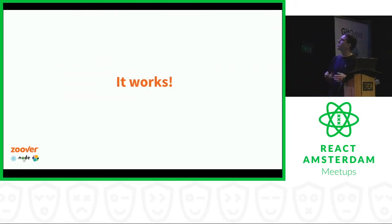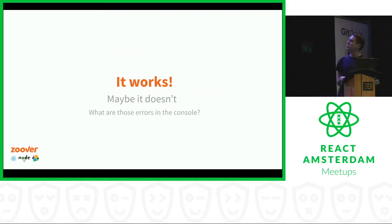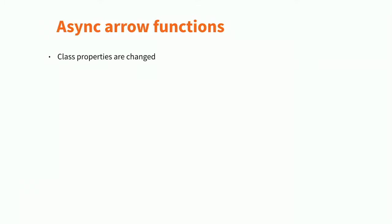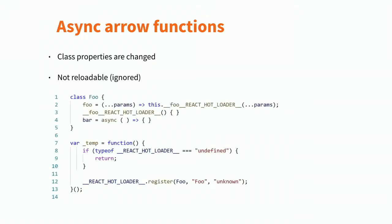Then it works — it's magic, you feel amazing, you feel productive, the best developer in the world. But all of a sudden you notice something is wrong, something is missing. You open the console and see all kinds of red errors. So what does not work in React hot reloading? The first thing is async arrow functions. An async arrow function is a class property just like any other arrow function, and the Babel plugin does some weird stuff with class properties related to how the React proxy works. The end result is that it's not reloadable — it's ignored. If you update an async arrow function, you won't see that change in your browser without a refresh.